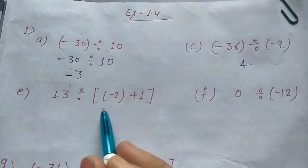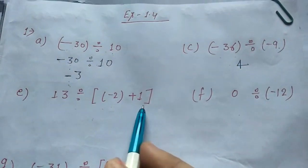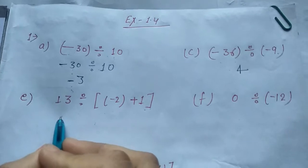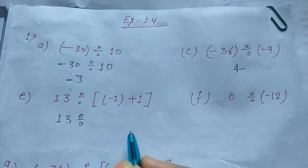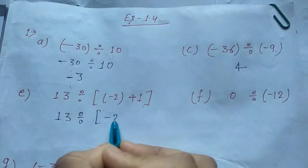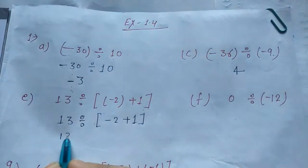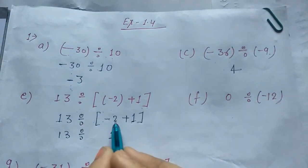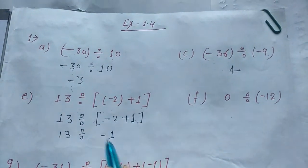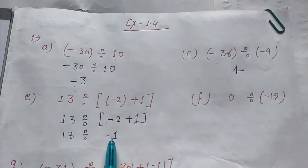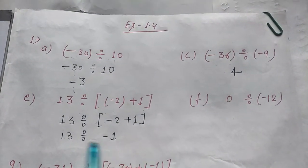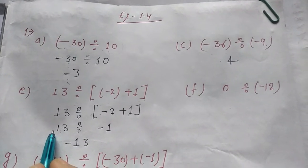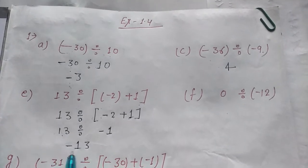Part D: 13 divided by bracket minus 2 plus 1 — this is called square brackets. So according to BODMAS, firstly we solve the bracket: minus 2 plus 1. Minus plus is minus, 2 minus 1 is 1, and 2 is the greater number, its sign is negative, so the answer will be negative. 13 divided by minus 1. Abhi humne rule padha hai ki agar hum negative se kisi integer ko divide karenge toh answer negative aayega agar integer positive hai.